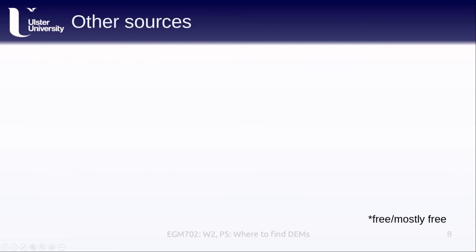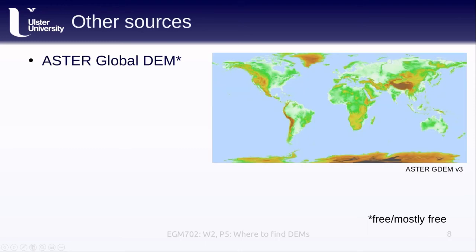These are not the only global or semi-global products available. There is also the ASTER Global DEM, or ASTER GDEM — most recent version is version 3. This is available at a global resolution of 30 meters and is fairly accurate over most areas, although areas with lots of clouds or highly reflective surfaces like glaciers and ice sheets may have more significant errors, so that is something to be careful of when using the GDEM.